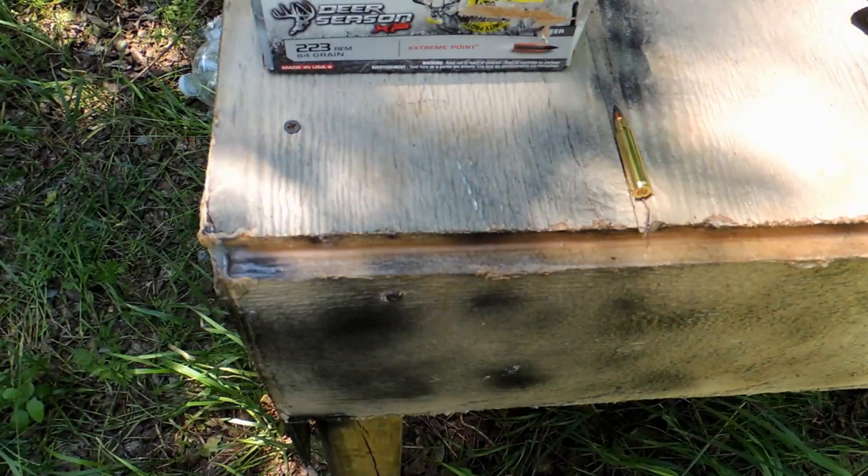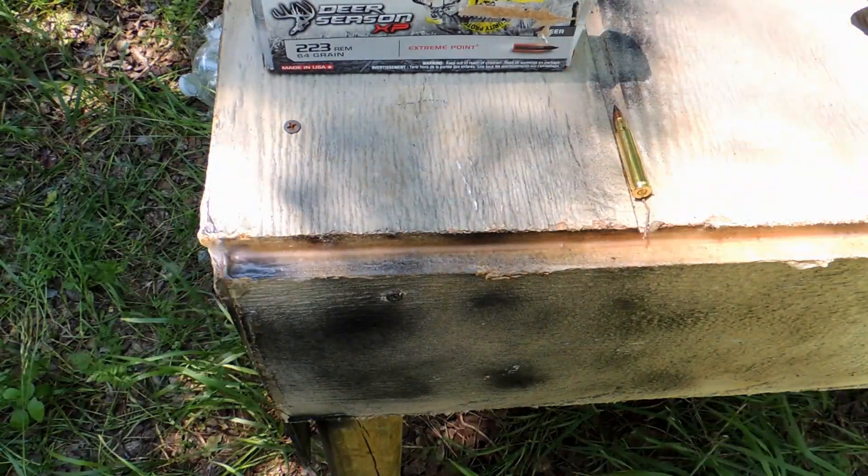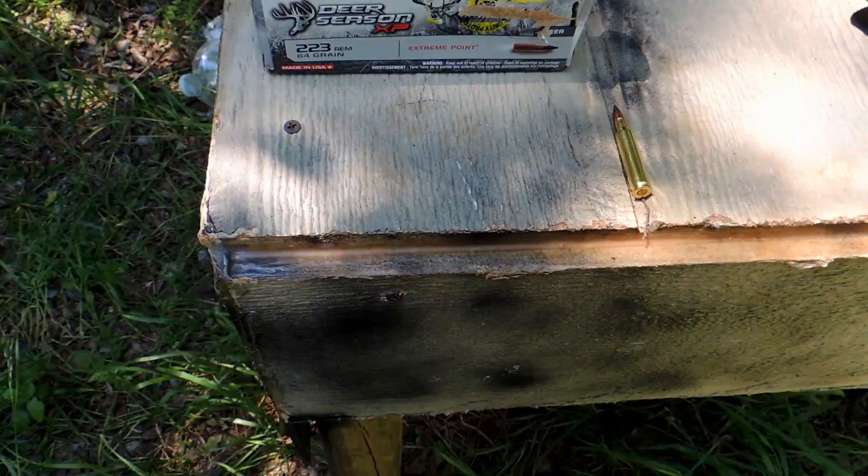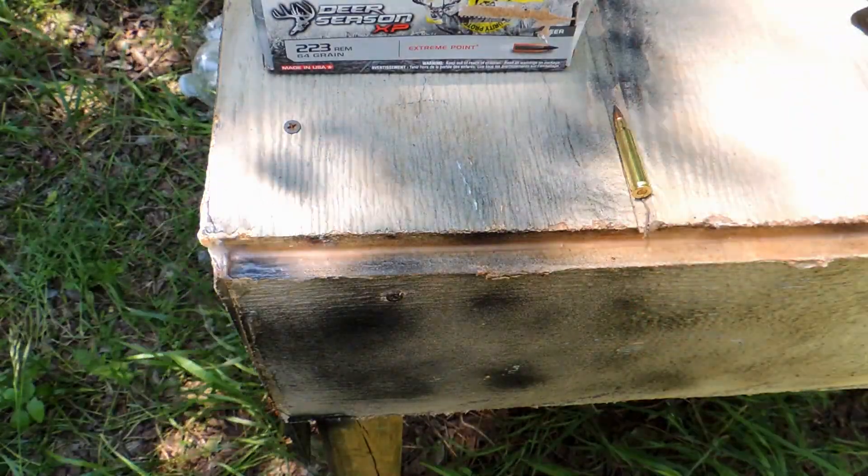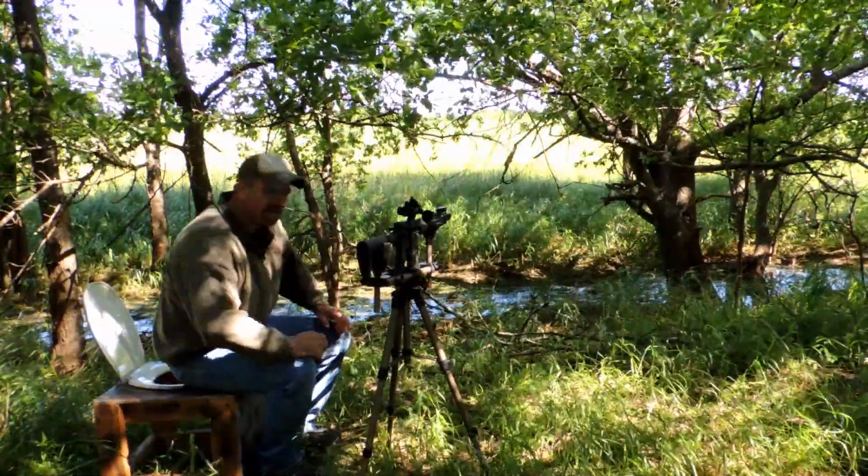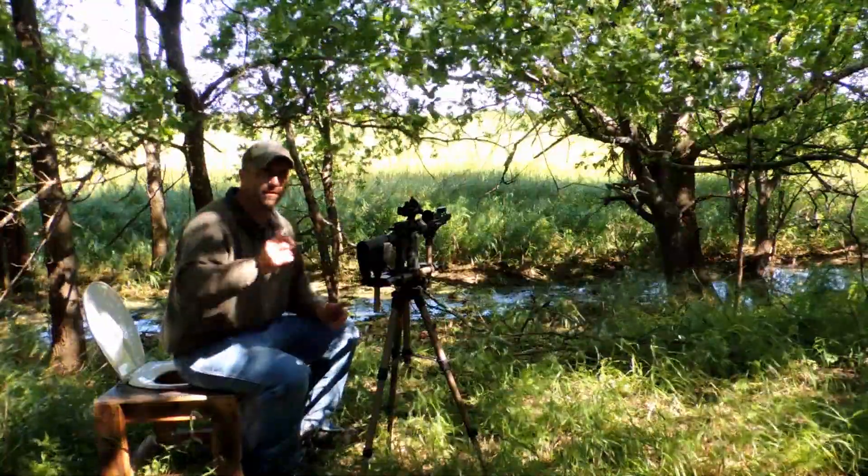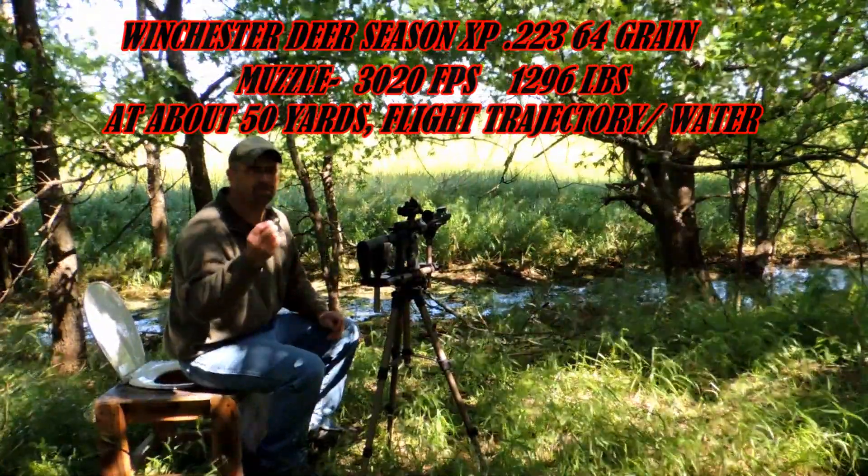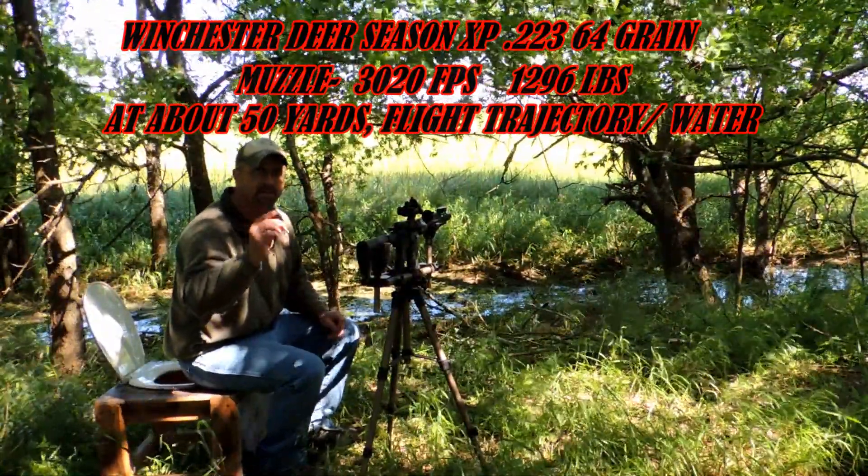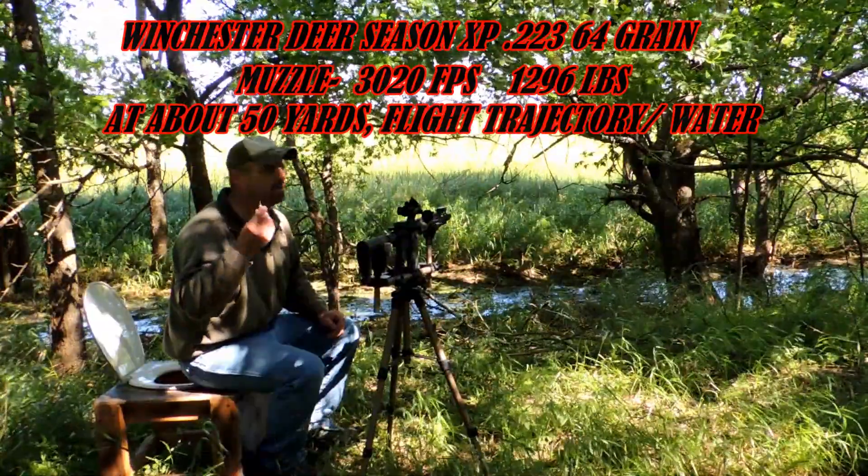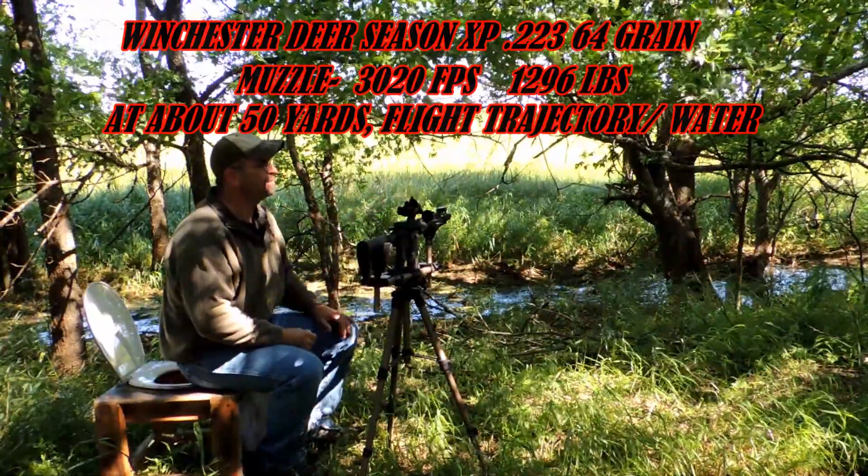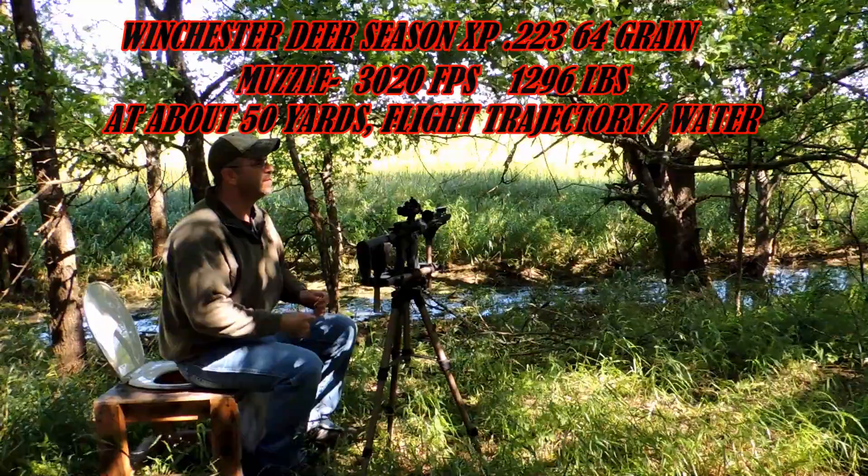And what that is, is board, water jug, board, water jug, board, water jug with our scientific grid on it. Alright, here we go, flight trajectory of the Winchester Deer Season XP, 223, 64 grain. Got the boards down, y'all know this spiel, so here we go.